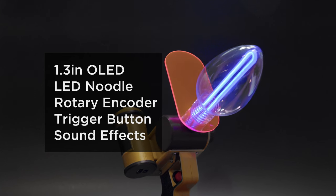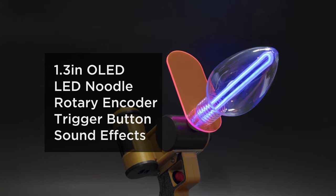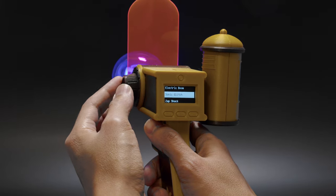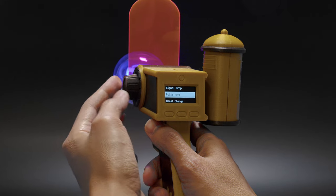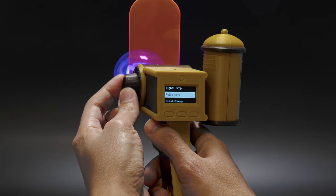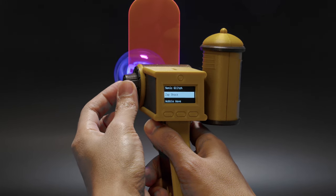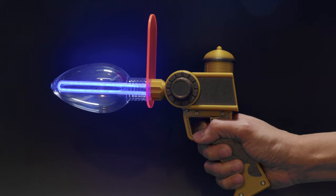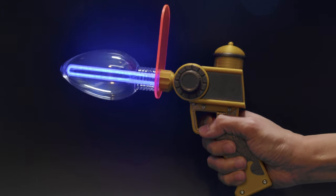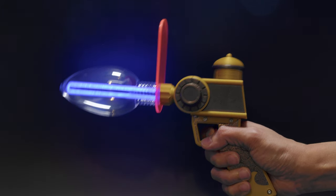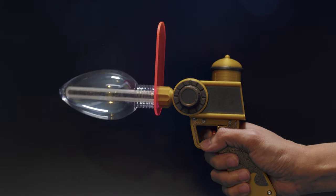We designed the prop to house an OLED screen, a rotary encoder, an LED noodle, and a trigger button. A list of audio files stored on the microcontroller are displayed on the OLED screen and you can use the rotary encoder to cycle through them. Pressing the button triggers the highlighted sound effect and lights up the LED noodle that's fitted inside a plastic ornament.